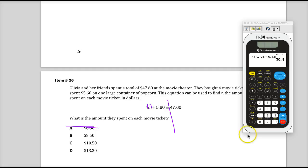So I'll go straight to what we think our answer is. 4 times 10.50 plus 5.60. See? 47.6, which is 47.60.